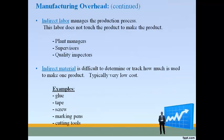All indirect manufacturing costs are included in manufacturing overhead, including indirect labor and indirect materials. Indirect materials and indirect labor are product costs required to make the product; however, the same amount is not required to make each product, or the company cannot or does not quantify how much is required to make just one product.